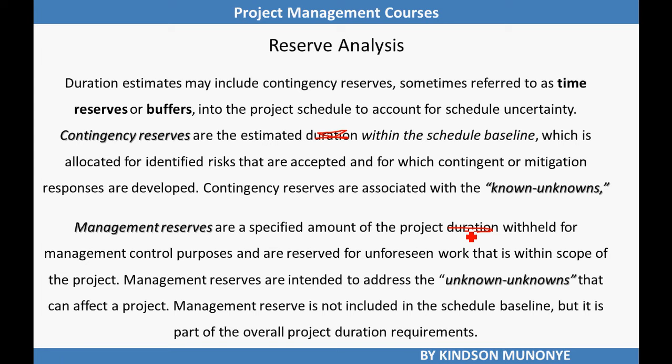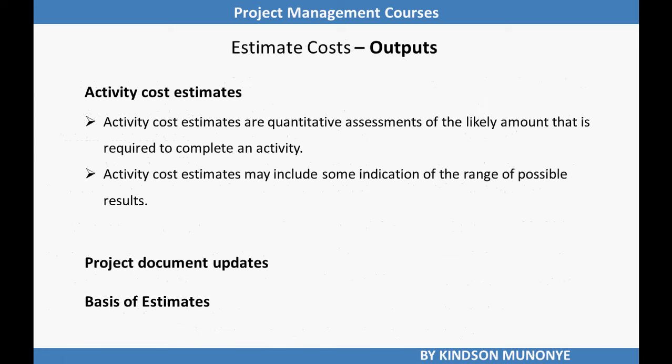Let's move into the outputs of estimate costs. There are three outputs. Activity cost estimates are quantitative assessments of the likely costs required to complete an activity, and may include an indication of the range of possible results. Basis of estimates provides supporting details that may include assumptions made, known constraints, indication of the range of possible estimates, and the confidence level of the final estimate. The third output is project document updates.